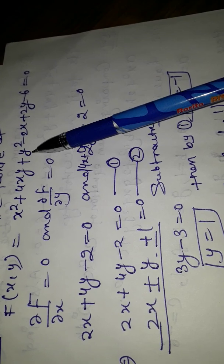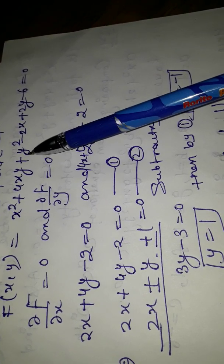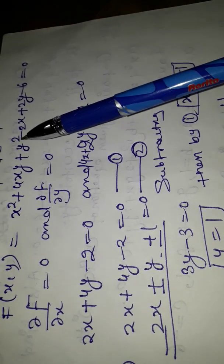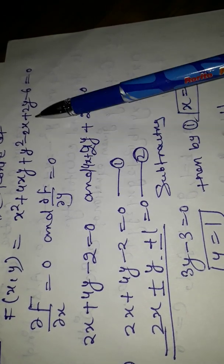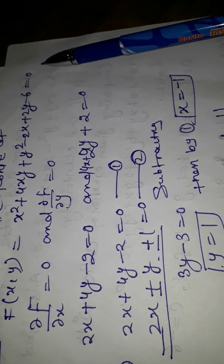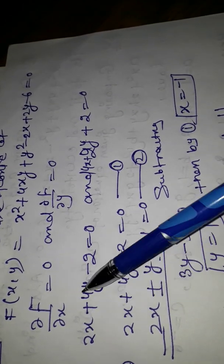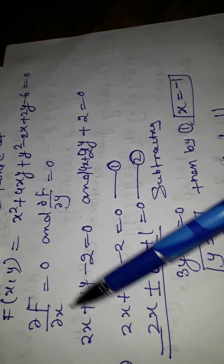The differentiation of y² with respect to x is 0, and the differentiation of -2x is -2. So we get the equation 2x + 4y - 2 = 0 after differentiating with respect to x.